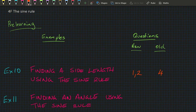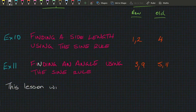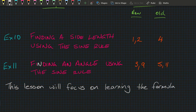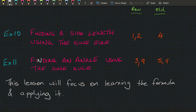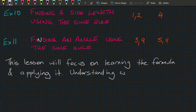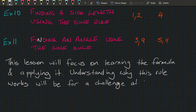Then we'll do Example 11, where we're going to find an angle using the Sine Rule. Your pre-learning for this example will be questions 3 and 9 in the new book and questions 5 and 11 in the old book. This lesson will focus on learning the formula and applying it — understanding why the rule works will be a challenge at the end of this block.